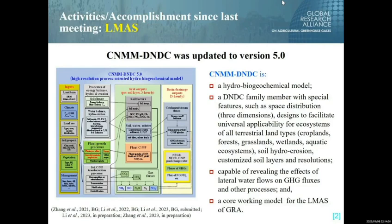It is a DNDC family member with special features such as spatial distribution, designed to facilitate universal applicability for ecosystems of all terrestrial land types, soil hydro-erosion, customized soil layers, and resolution. This model is capable of revealing the effects of natural water flows on greenhouse gas fluxes and other biogeochemical processes.